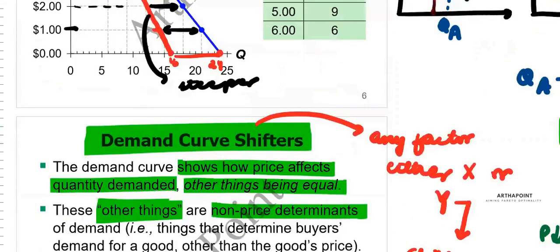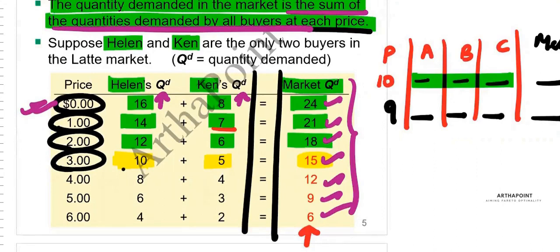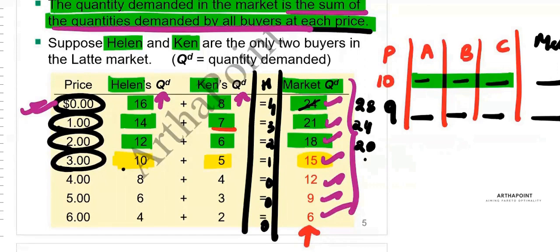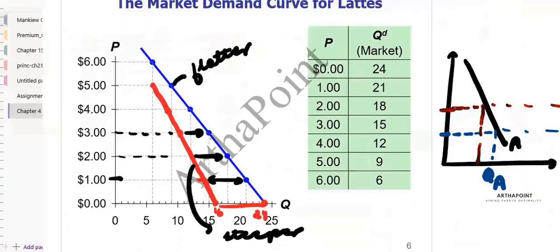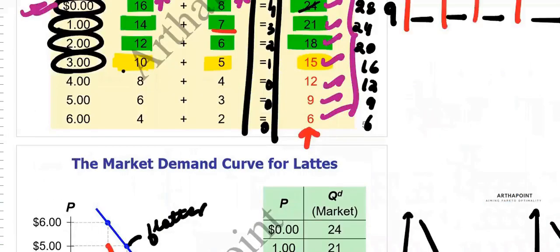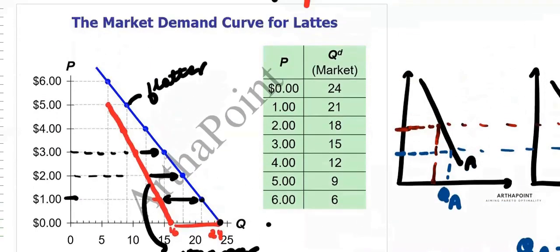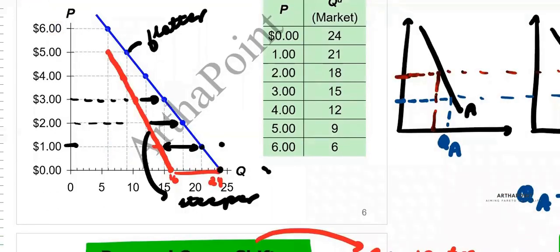For example, if I add another individual — say Harry — and he demands four units, three units, two units, one unit, zero, zero, zero, when you add this together, instead of 24 this becomes 28, instead of 21 it becomes 24, and so on. So the point at 28 shifts out further, and the curve shifts to the right.